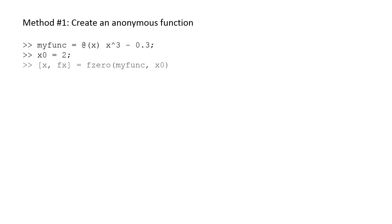We then invoke the fzero function in the statement: [x, fx] = fzero(myfunc, x0). Since we have omitted the options argument, we will use the default tolerance and display settings. The root estimate will be assigned to x, and the value of the function at the root estimate will be assigned to fx. After executing the statement, we find that x is equal to approximately 0.6694, and the value of the function at x is approximately 0.